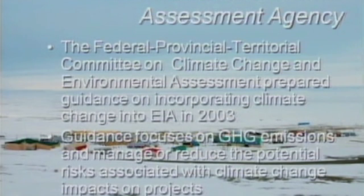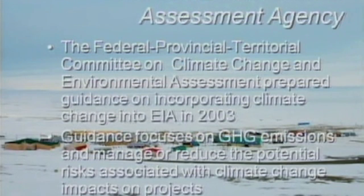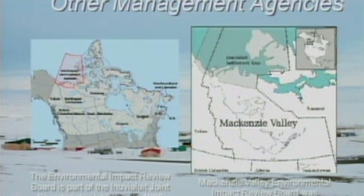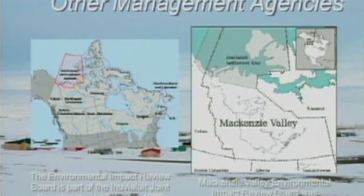One reason it's not there is that back in 2003, the Federal-Provincial-Territorial Committee produced guidelines. These guidelines tended to set the stage for looking at GHG emissions and reducing potential risks associated with climate change impacts on projects — not the project's effect on the environment, but the effect of the environment on the project. Very little has been done in Canada since that stage, and this was a very important area to move forward on. The Canadian agency is overall responsible for impact assessment in Canada, for research and development and providing consistency across the country.